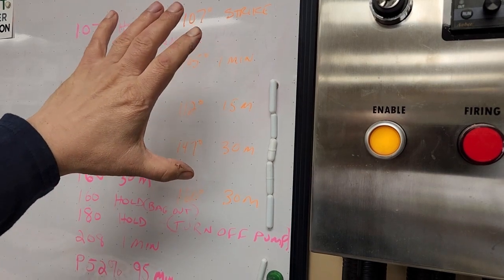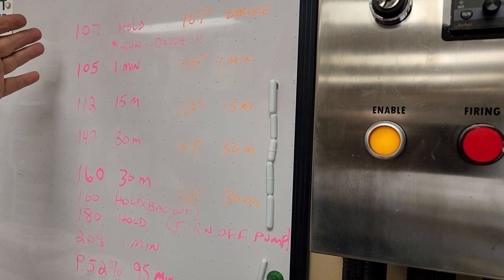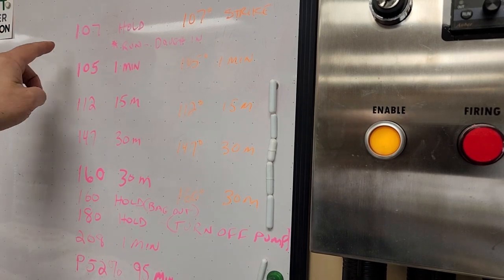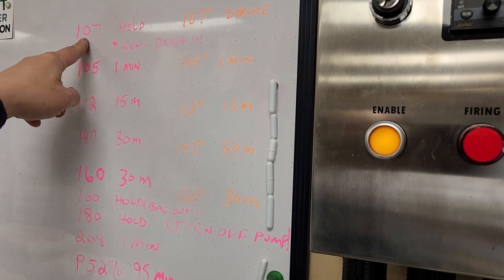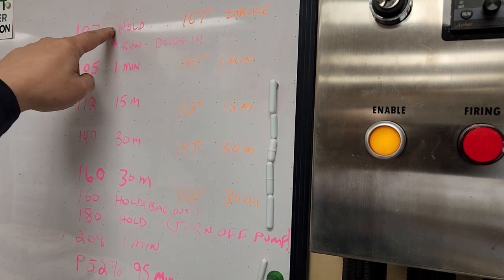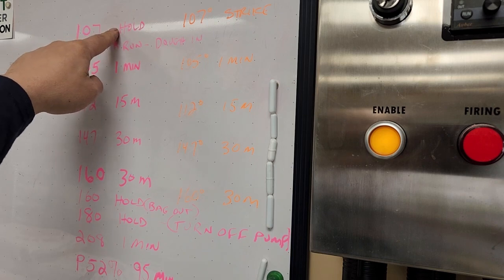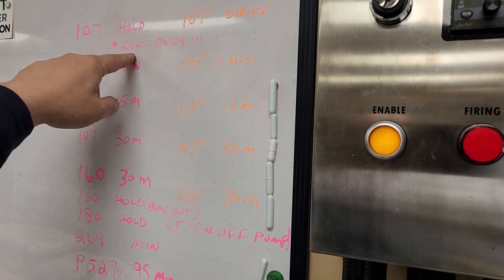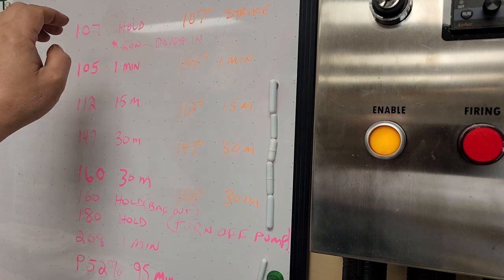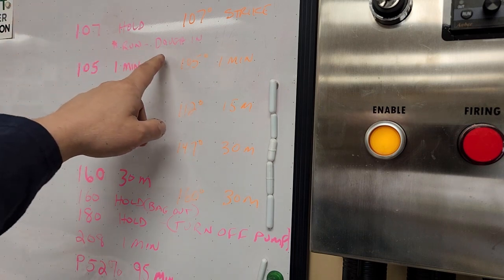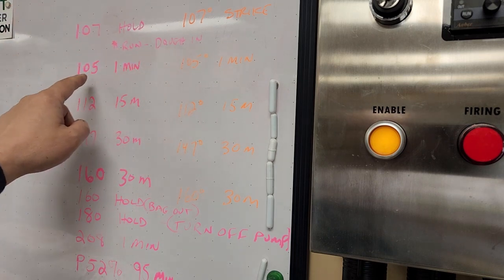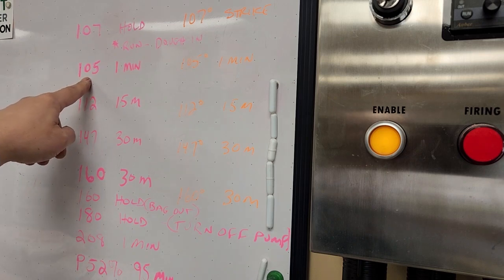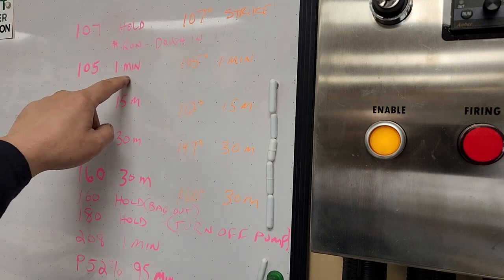That's what my recipe plan is and then I also write out what the program steps are going to look like. I got 107 as the strike temp and the time is hold because I don't want it to advance until I get over there and do something. Once I get to 107, I'm going to hit the run button to continue on to the next program and that's when I'm going to dough in.